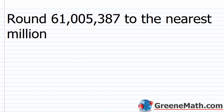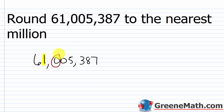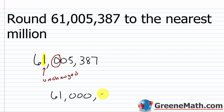For the last problem we want to round 61,005,387 to the nearest million. The millions place digit is the one. The digit to the right of the one is zero, which is in the category of four or less, so we leave the digit in the round-off place unchanged. The six and the one stay unchanged, and everything to the right becomes zeros. So 61,005,387 rounded to the nearest million is 61,000,000.